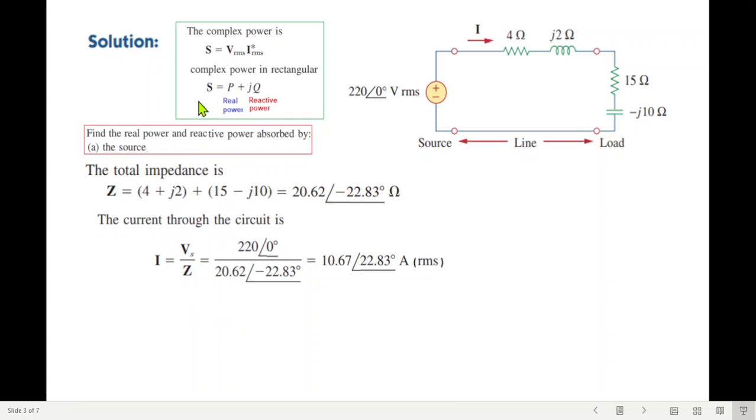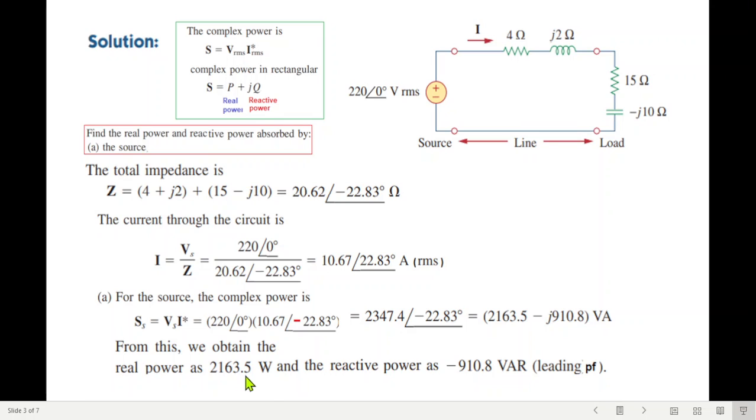Now that we have found current, we'll use this formula. We know V. And we will just write this I in conjugate form by changing the sign. So S, S of the source power. V is 220 angle 0. I is 10.67. Just change the sign for the conjugate. And solving, we'll get this answer. We will prefer that it be in the rectangular form. Because we write this P plus jQ. So this is P or the real part. And this is Q or the reactive part. So the answer will be the real power is 2163.5 watt. And the reactive power is minus 910.8 VAR volt ampere reactive.